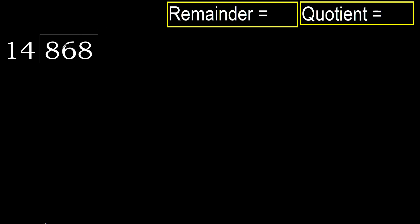868 divided by 14. 8 is less, therefore next. 86 is not less, therefore with 86: 14 multiplied by which number is nearest to 86 but not greater?